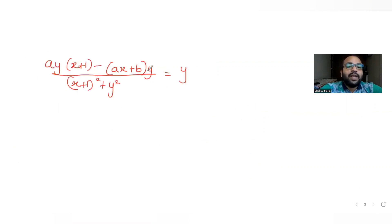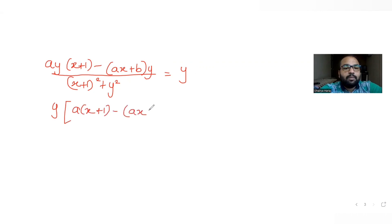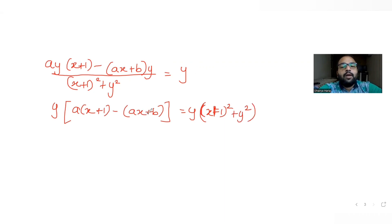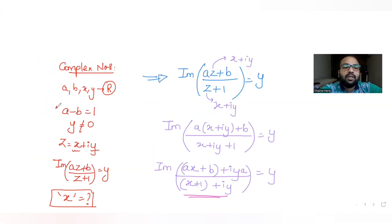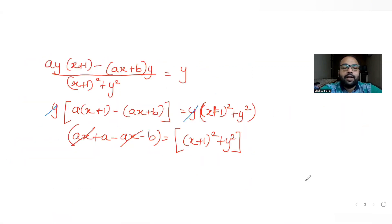I can take y common from the numerator: y · [a(x + 1) − (ax + b)] divided by [(x + 1)² + y²] equals y. Canceling y from both sides gives: a(x + 1) − (ax + b) = (x + 1)² + y². Expanding: ax + a − ax − b = (x + 1)² + y², so a − b = (x + 1)² + y². Since a − b = 1, we get (x + 1)² + y² = 1.